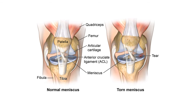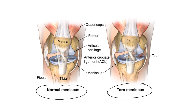Here's a normal meniscus on the left and a torn meniscus on the right. You can see the tear in there. You can't really sew these up, so you basically just cut off a little piece and kind of smooth it out.